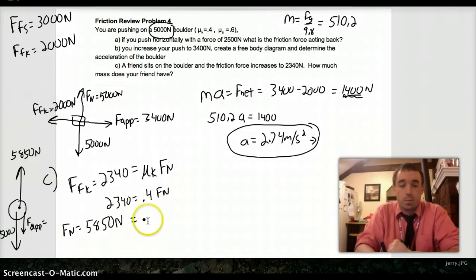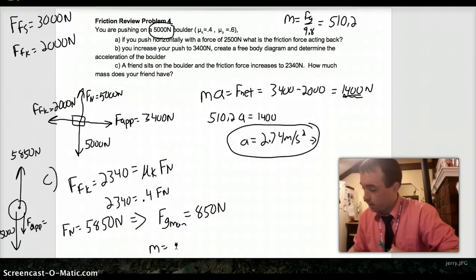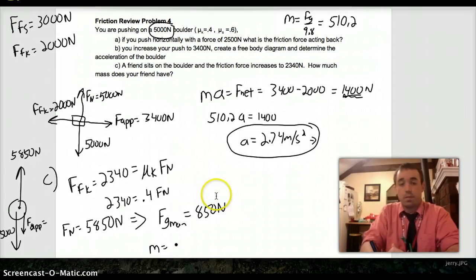So, obviously, pretty simple math. It tells us that our man has a weight. The weight of the man is, obviously, 850 newtons. To get the mass, I just divide 850 by 9.8, which gives 86.73 kilograms.